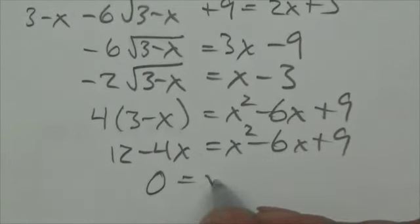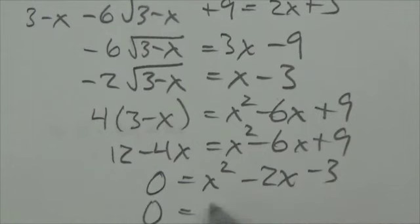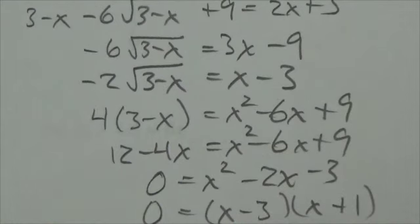It's a quadratic, so we'll set it equal to 0. So x squared minus 2x minus 3. So x, what have we got here, minus 3 plus 1. So x is either equal to 3 or negative 1.